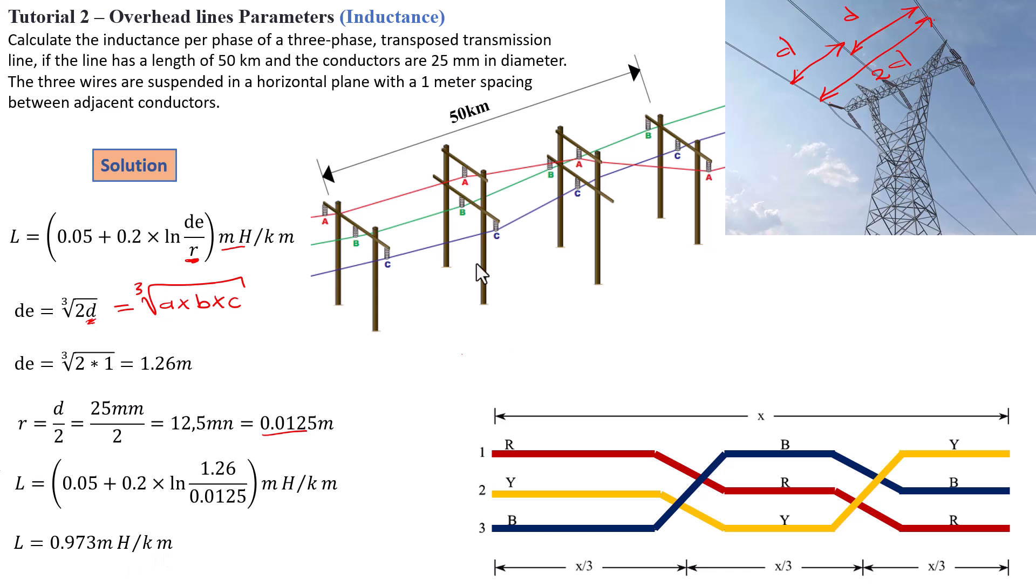Now, this basically tells us that if you're going to have this kind of configuration structure, that's the inductance that you have. So now, if your line is going to run for 50 kilometers, all you have to do is basically multiply the calculated inductance times 50 kilometers. So that will be L equals 0.973 times 50 divided by kilometer millihenry per kilometer. These will basically cancel the kilometers here and you're going to have a final inductance value of 48.63 millihenry for this line parameter here.